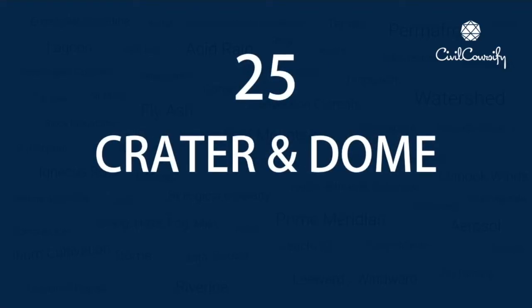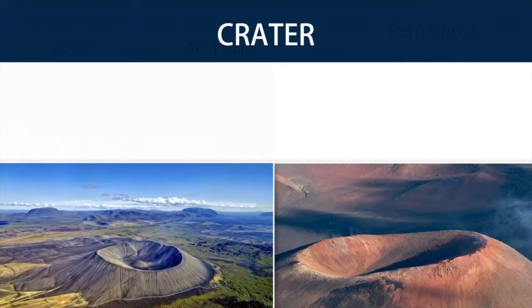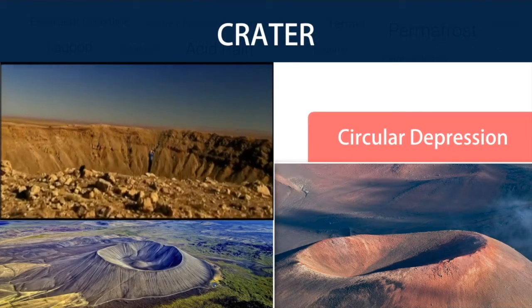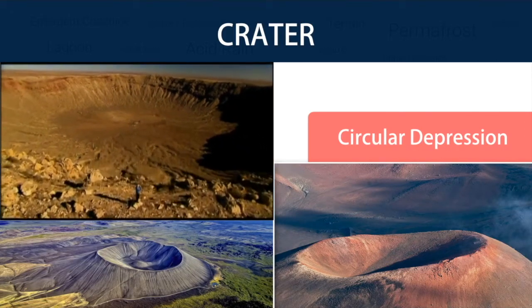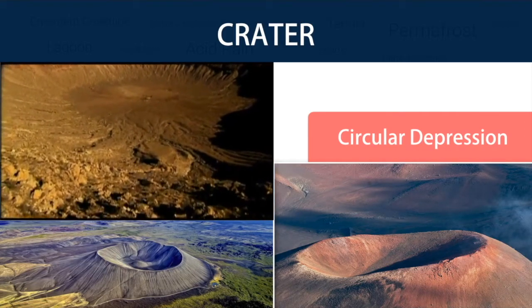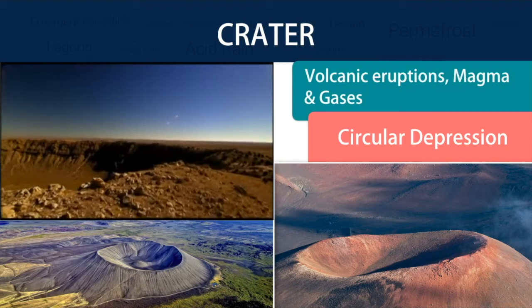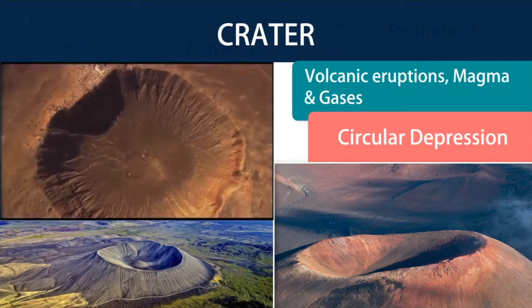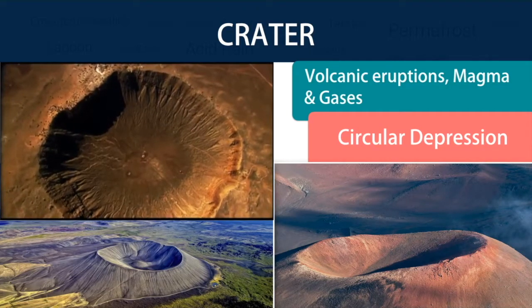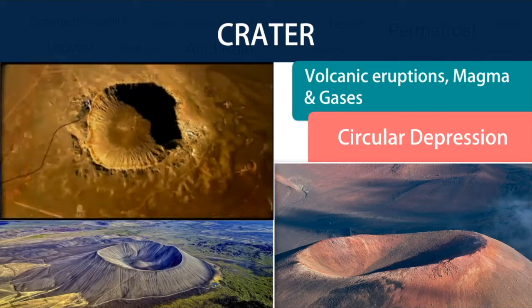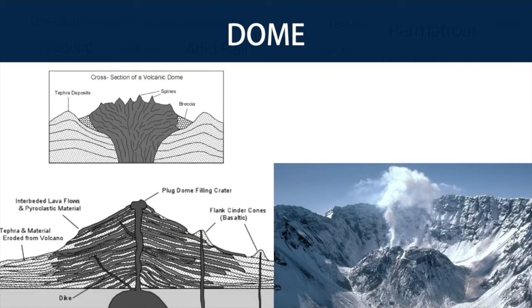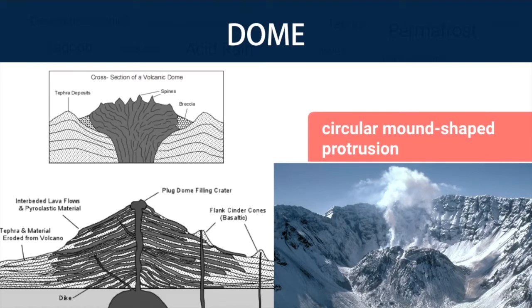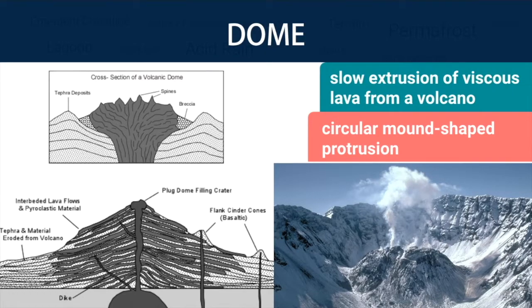Number 25: Crater and Dome. A volcanic crater is a roughly circular depression in the ground caused by volcanic activity. It is typically a bowl-shaped feature, with volcanic eruptions, molten magma, and volcanic gases rising from an underground magma chamber until they reach the crater's rim, from where the gases escape into the atmosphere and the magma is erupted as lava. In volcanology, a lava dome or volcanic dome is a roughly circular mound-shaped protrusion resulting from the slow extrusion of viscous lava from a volcano. The characteristic dome shape is attributed to high viscosity that prevents the lava from flowing very far.